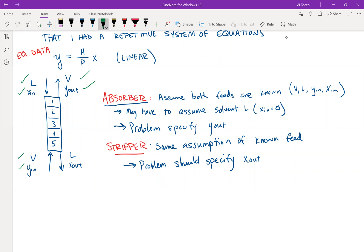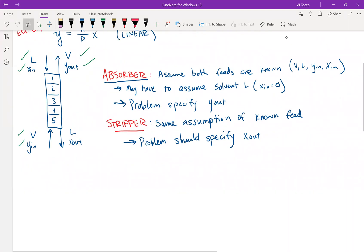Remember, of course, the other assumption is that V is equal to V, L is equal to L, and we can make that for a dilute system. So if the concentration of the solute is very small in both phases, then we can assume that V is equal to V, L is equal to L for all the flow rates.